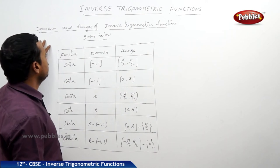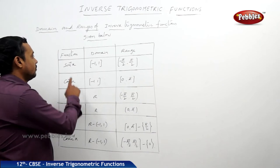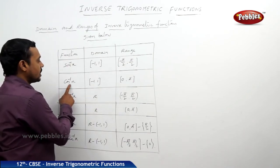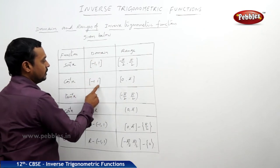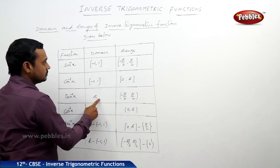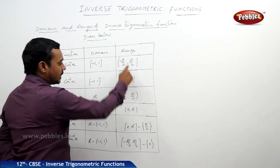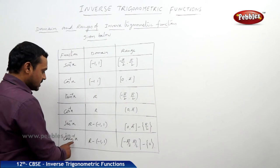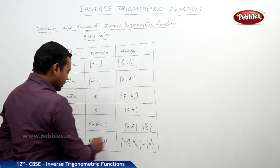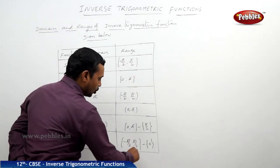Finally, we can summarize the domains and ranges of the six inverse trigonometric functions. For sin inverse x: domain is [−1, 1], range is [−pi/2, pi/2]. For cos inverse x: domain is [−1, 1], range is [0, pi]. For tan inverse x: domain is R, range is (−pi/2, pi/2). For cot inverse x: domain is R, range is (0, pi). For secant inverse and cosecant inverse x: domain is R minus (−1, 1). The range of secant inverse x is [0, pi] excluding pi/2, and the range of cosecant inverse x is [−pi/2, pi/2] excluding 0.